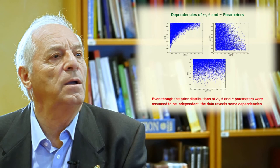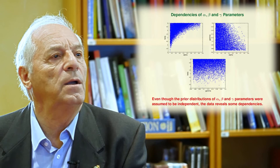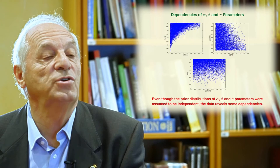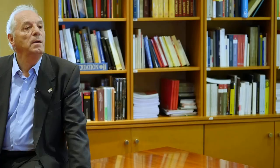we can see, for example, that the beta and the alpha parameters are clearly dependent. The same occurs with the alpha and gamma, but beta and gamma are almost independent. So, it is very interesting to study these things.